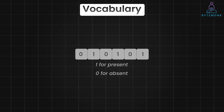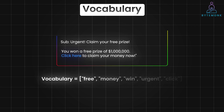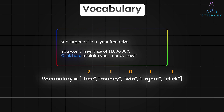Let's revisit our example email with subject 'Urgent, claim your prize' and body: 'You won a free prize of 1 million dollars, click here to claim your money now.' Say we have a vocabulary of 5 words: free, money, win, urgent, and click. To include word count, we modify the vector representation — free at index 0 appears 2 times, money at index 1 appears 1 time, win is absent at 0 times, and so on. Given this email, we want to determine the probability that this email is spam — the probability of spam given the words free and money.